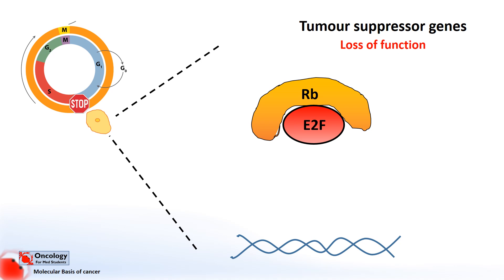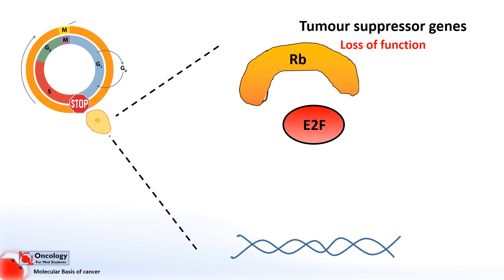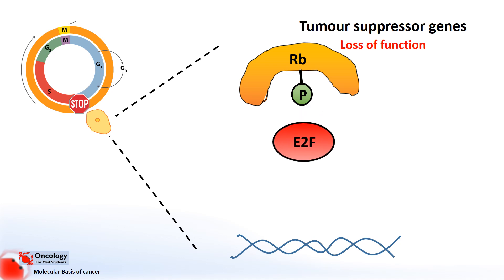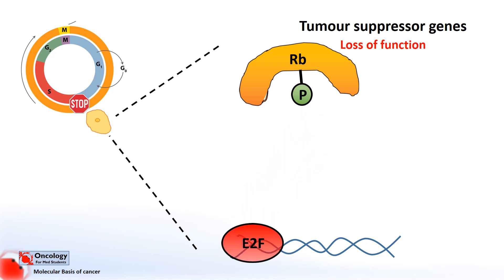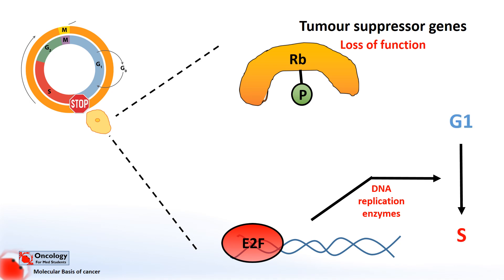For a cell to divide, therefore, RB needs to be inactivated. This is achieved through a process called phosphorylation, whereby a chemical group called a phosphate group is added to the protein to inactivate it. This allows E2F to go ahead with its job of allowing the cell to move into S phase. By controlling the phosphorylation of RB protein, the rate at which cells enter S phase and later divide can be controlled.